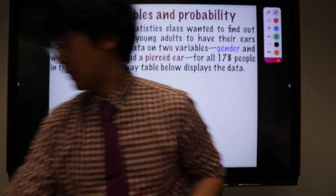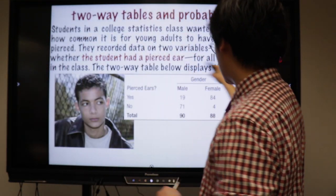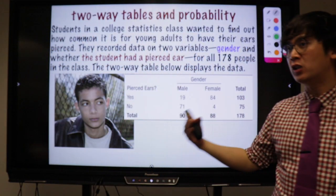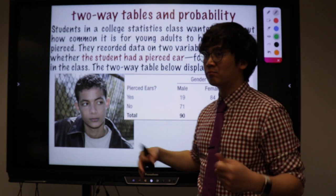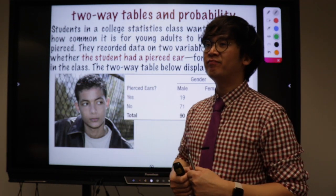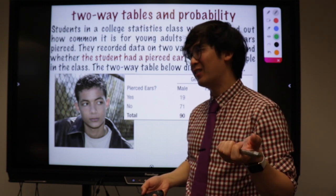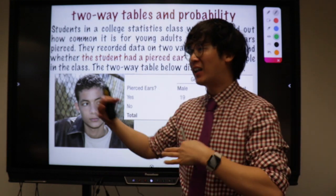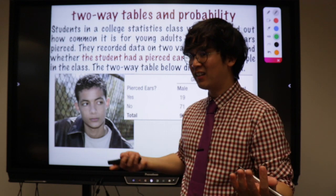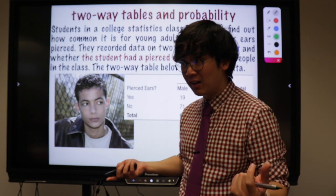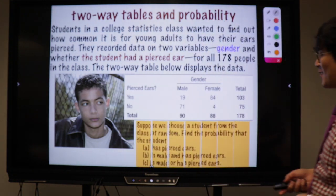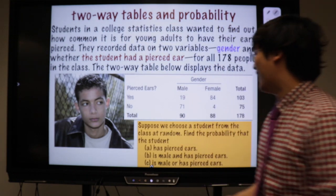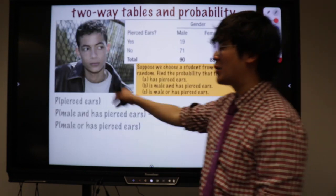Now let's look at a better two-way table. They took a survey at a certain university and asked students whether they have ear piercings or no ear piercings, and whether they are male or female. Because males can wear earrings too.